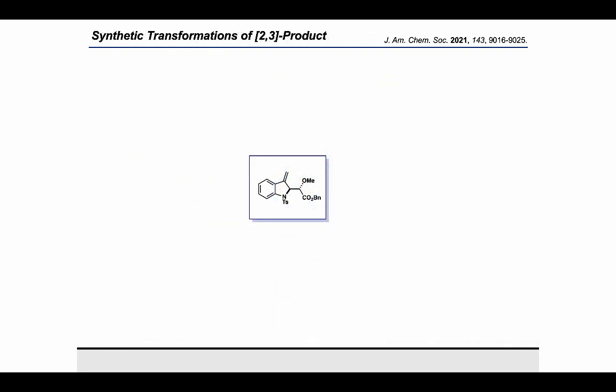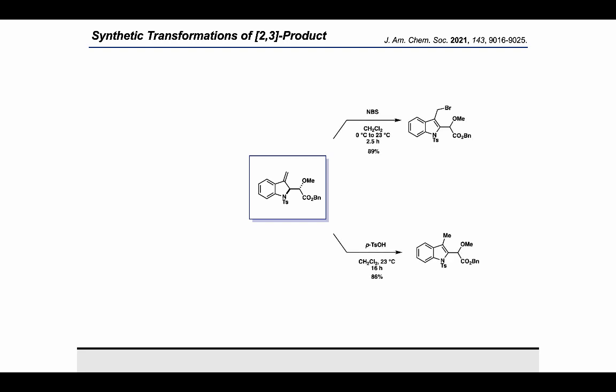After that, we were interested in looking into the potential synthetic applications of the rearrangement products. We can do several synthetic transformations on the 2,3 product to access other functionalized indole compounds. We were able to show some selected examples through bromination, acid-mediated re-aromatization, and ozonolysis to access different useful building blocks.